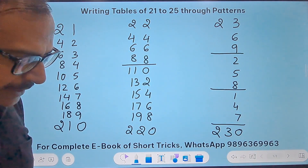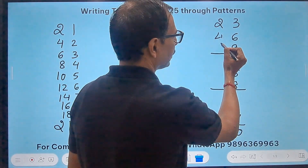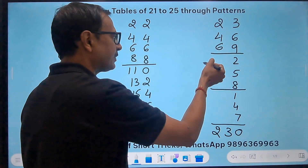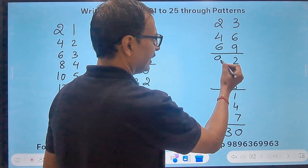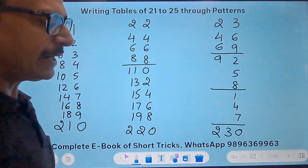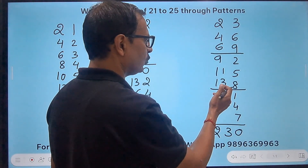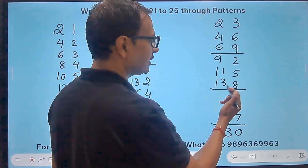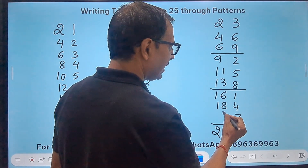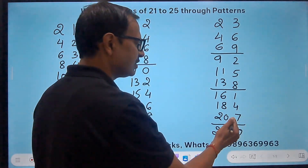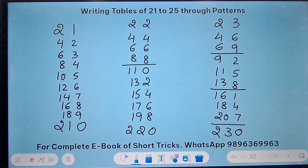Now start writing the even numbers for the tens digit: 2, 4, 6. Then skip-count by 2 — 6 becomes 7, 8, 9. Then write the odd numbers: 9, 11, 13. Skip-count by 2 again — 13 means 14, 15, skip 16. Then write even numbers 18 and 20. And that's it — 230 is already there. You have the table of 23.